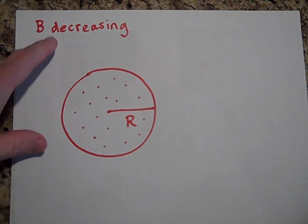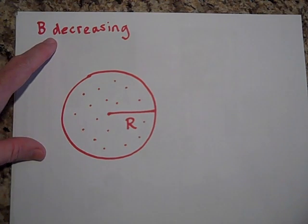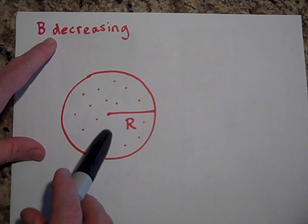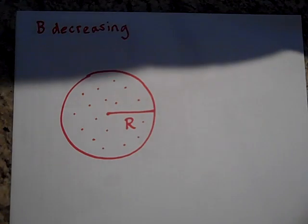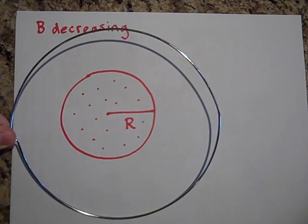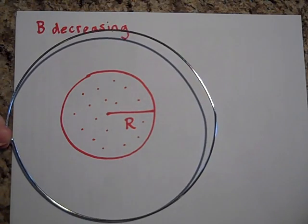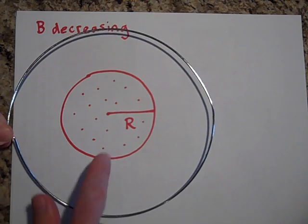The magnetic field is contained just in this boundary. It's a circular boundary of radius capital R. But the B is decreasing with time. So as time goes on, these Bs are disappearing. If you put a wire here, you're going to induce current in this wire.